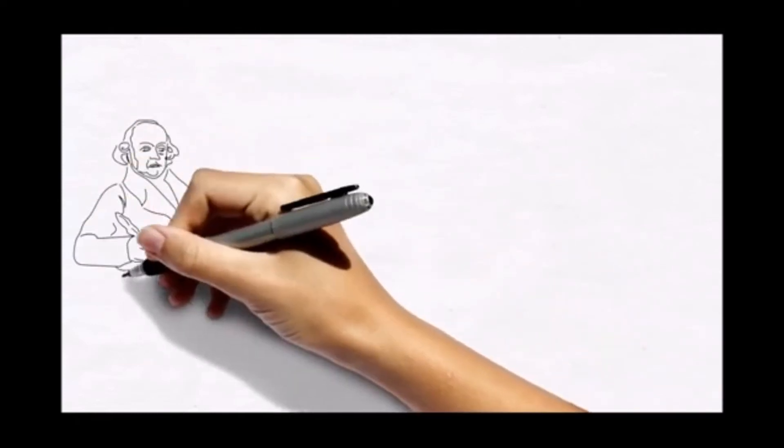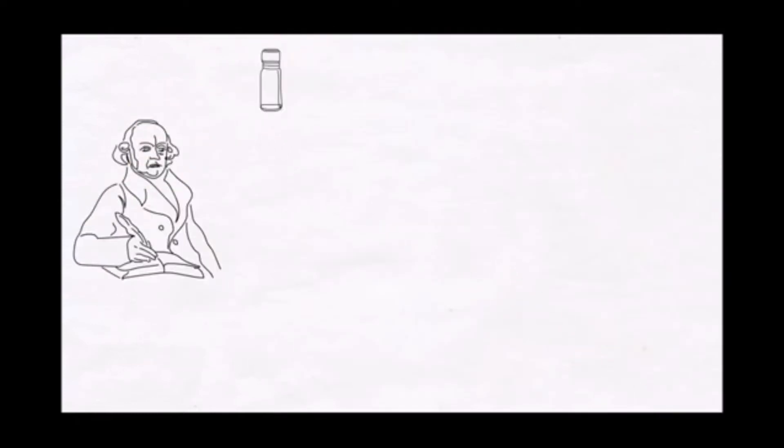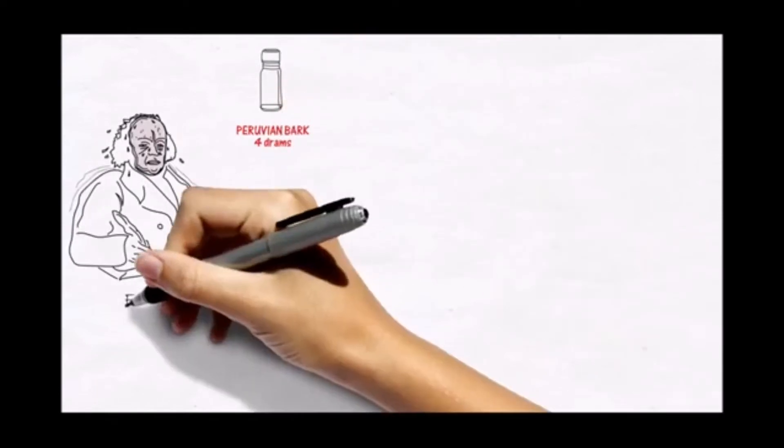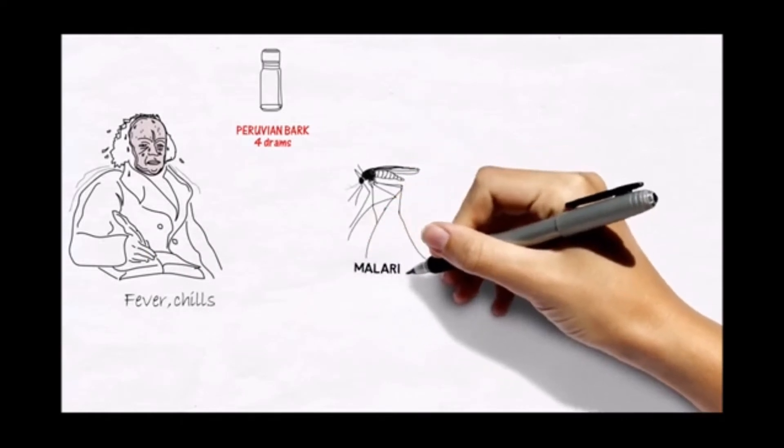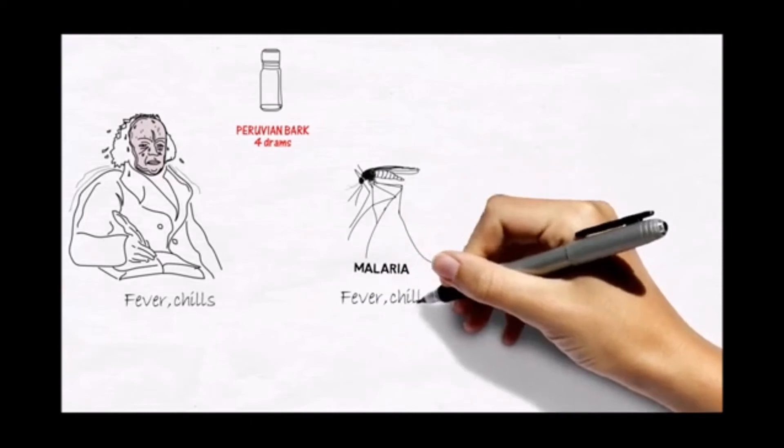Hahnemann started by experimenting on himself, taking a large dose of Peruvian bark and noting his symptoms, mostly fever and chills. He knew the drug relieved malaria, which also causes fever and chills.